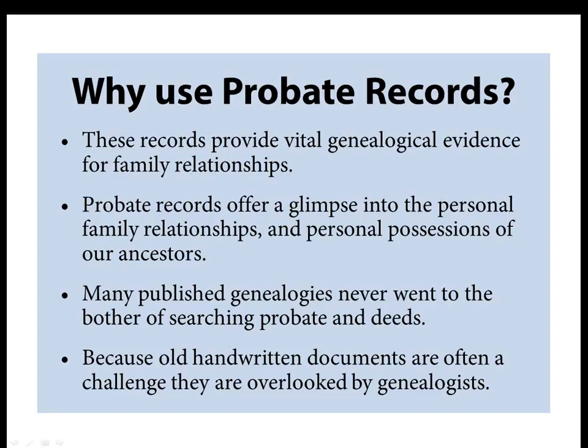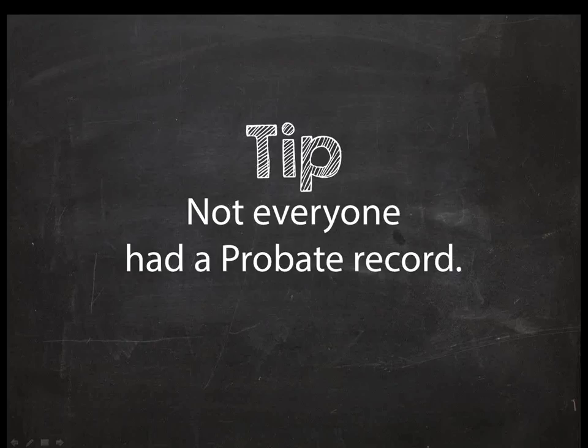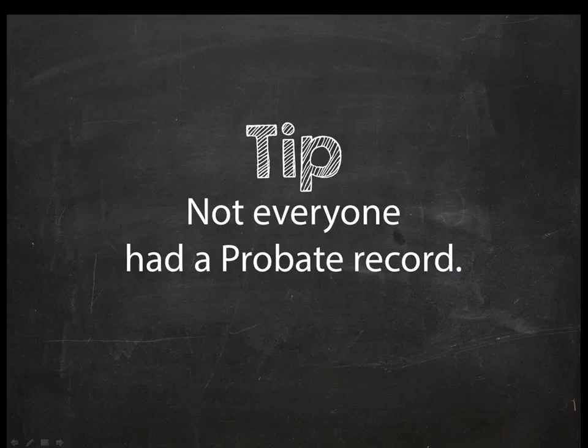One important tip: not everyone had a probate record. You'd be surprised how many people assume their ancestor had to leave something. Maybe they died without writing a will, or their estate passed to the oldest children or the surviving spouse through her dower right. Also, don't assume that because your ancestor may not have been wealthy that they did not leave something. Even the smallest estates may have had some property — real or personal — that had to be divided up. So do check the probate indexes for the counties, and be aware that county boundaries do change.